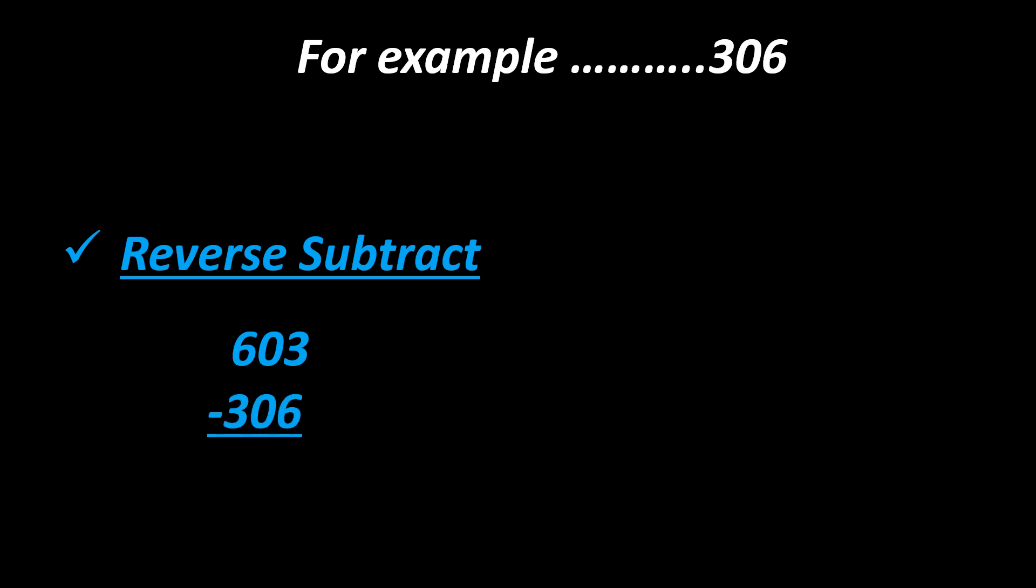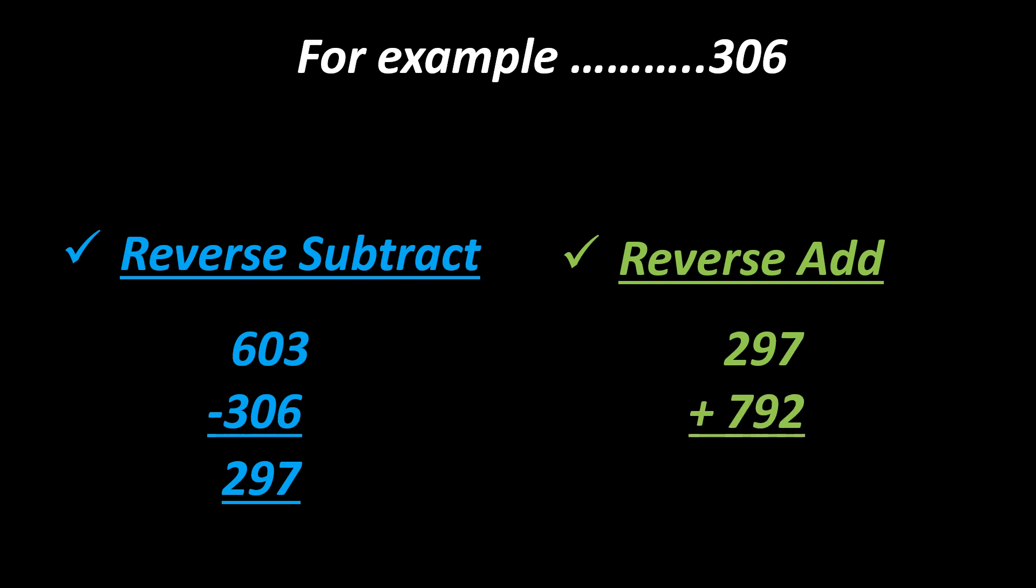Say, for example, if you want to choose 306, reverse subtract smaller number from bigger number, that is 603 minus 306, and the answer is 297. Reverse add: 297 plus 792. Your answer is here: 1089. Seems like you guys are enjoying.